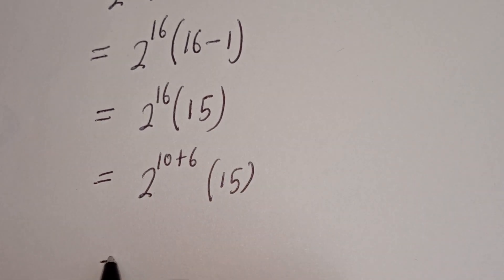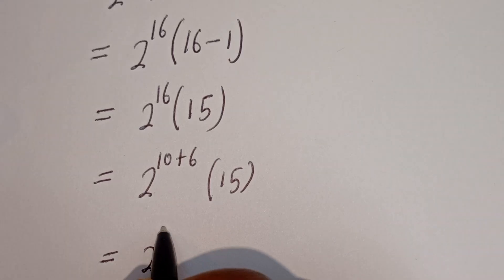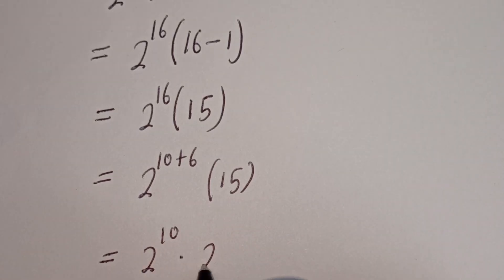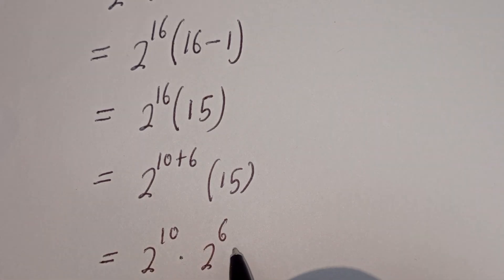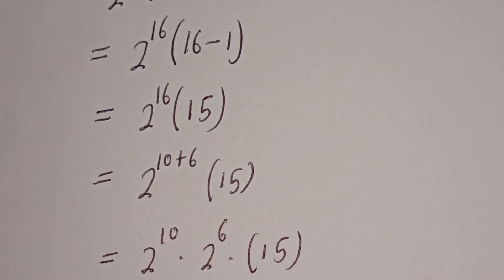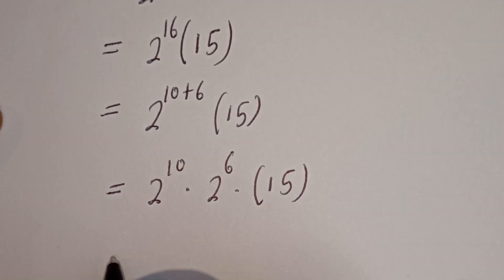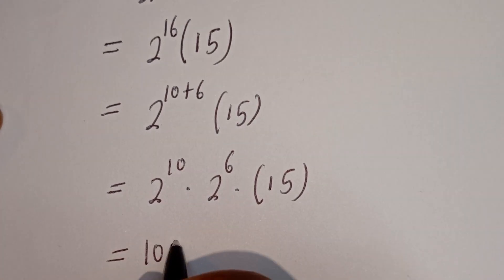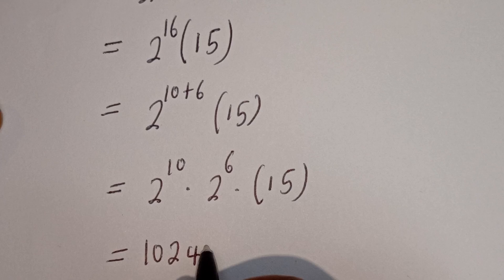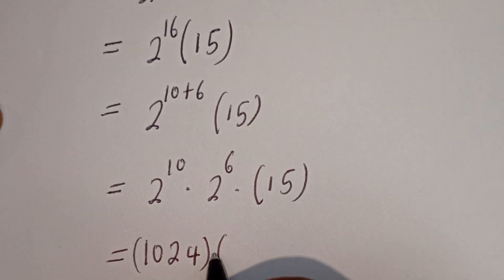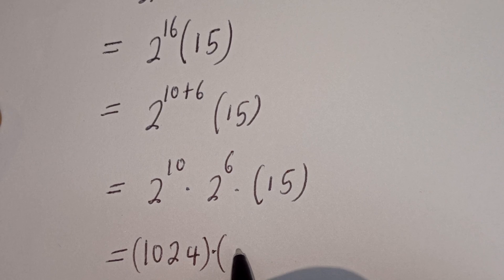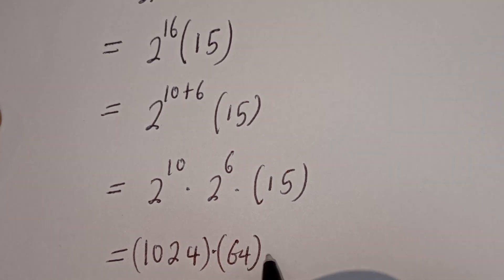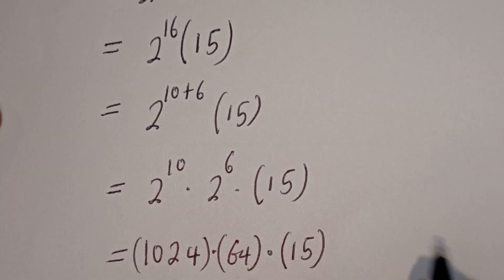So this can be written as 2 to the power of 10, multiplied by 2 to the power of 6, then multiplied by 15. Now, 2 to the power of 10 is 1024, multiplied by 2 to the power of 6, which is 64, multiplied by 15.